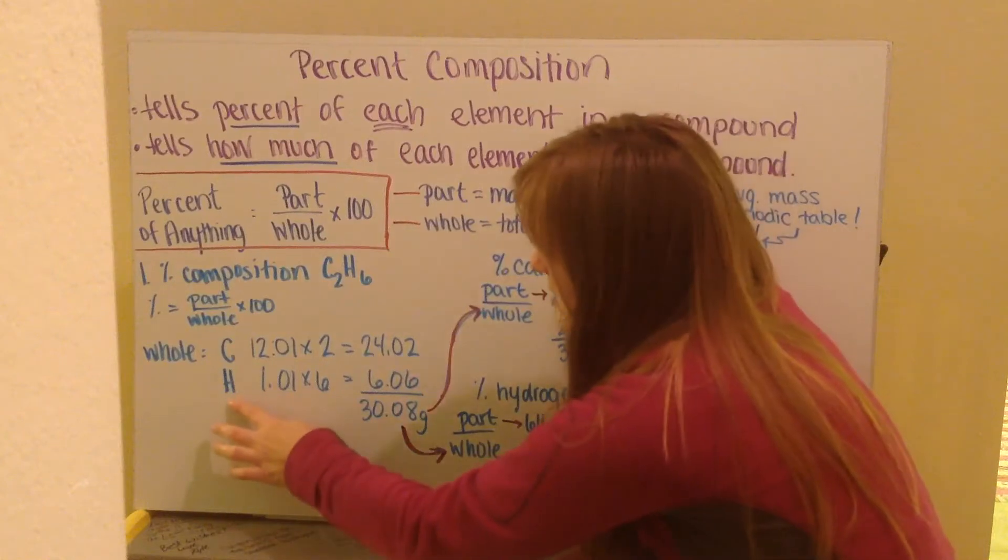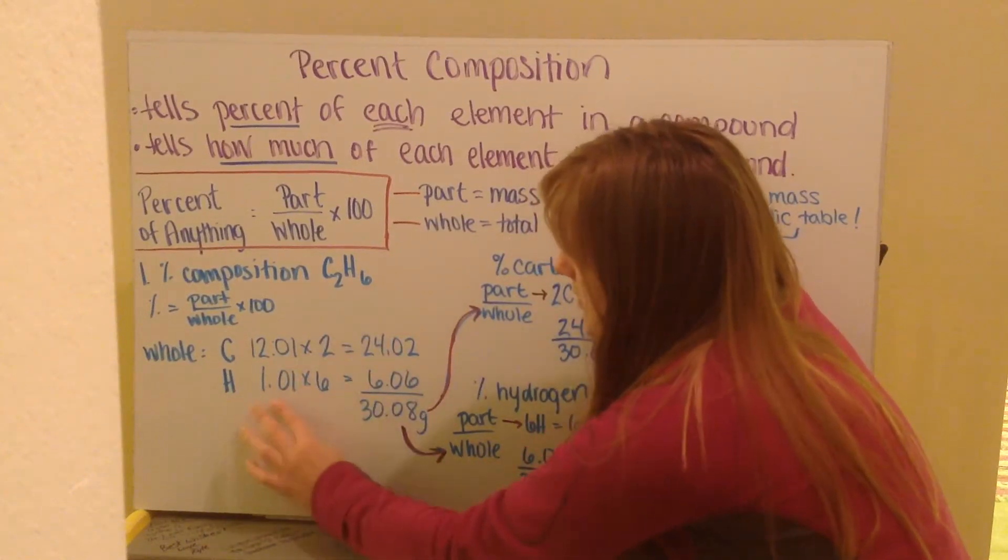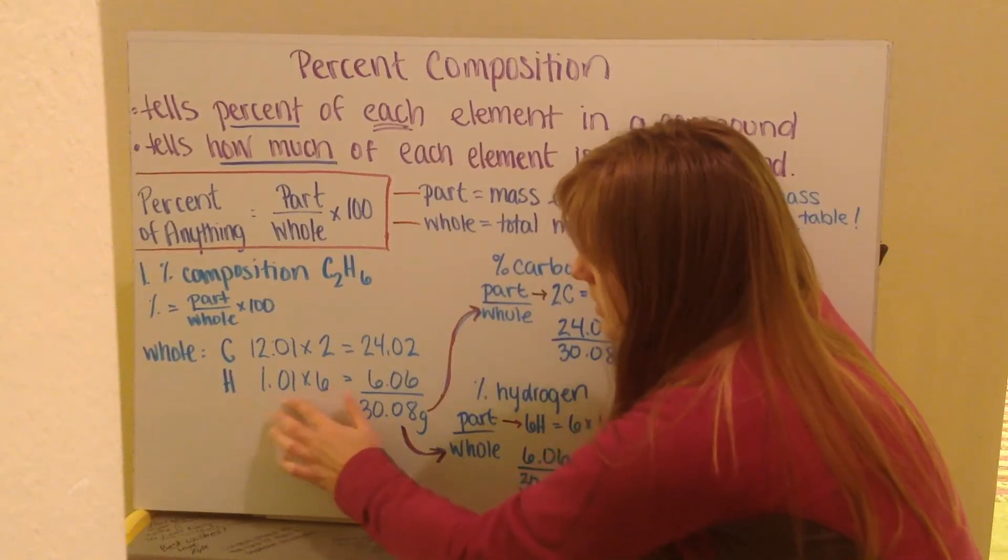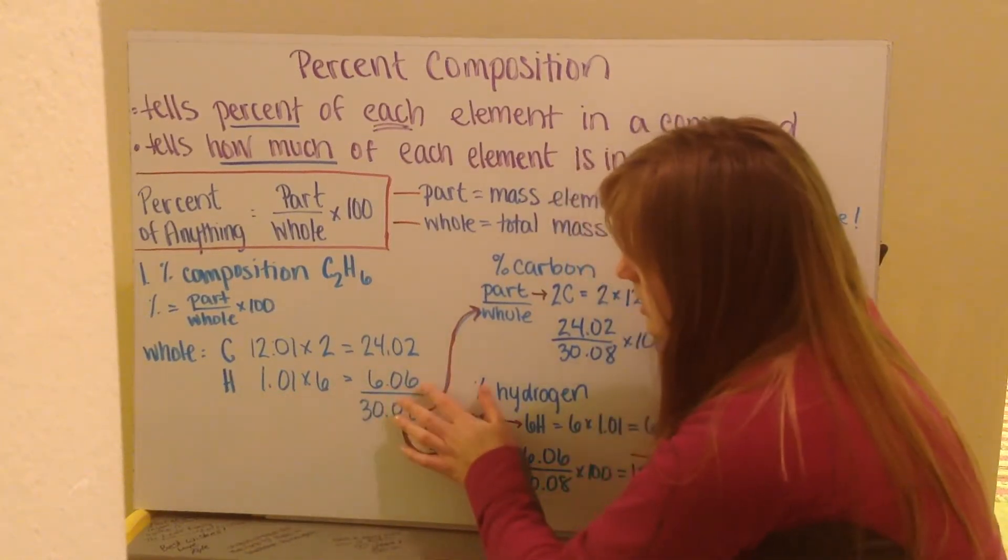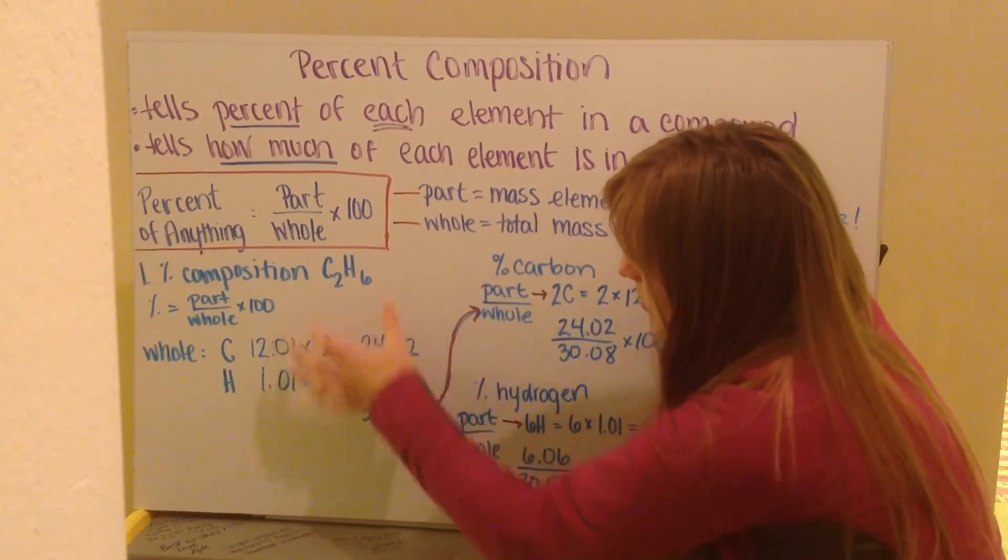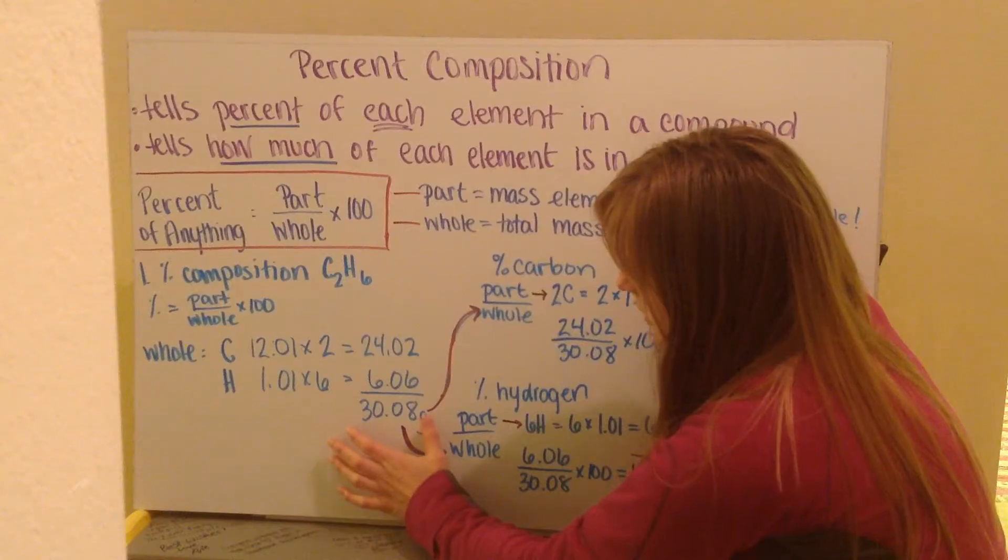For my hydrogen, I have six hydrogens here. My mass of every hydrogen atom is 1.01, so I have 1.01 times 6, which gives me 6.06 grams. Then I add the two of them together to get my total for my whole piece, and I get 30.08 grams.